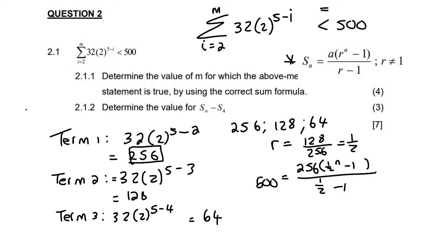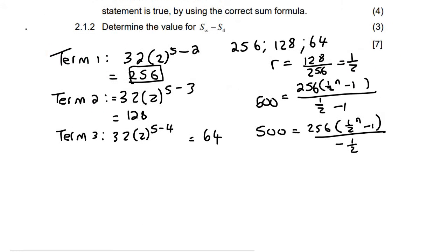Now we're just going to try to solve for n. So what I like to do here is, at the bottom it's going to be negative a half. So I'm going to multiply the negative half over to the other side, and that will give me negative 250 equals to 256 times a half to the power of n minus 1.